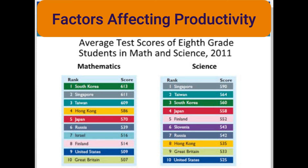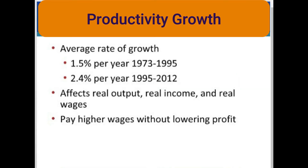The test performance of U.S. 8th grade students did not compare favorably with that of 8th graders in several other nations in the 4th International Math and Science Study from 2011. In mathematics, the United States came in 9th, and in science, 10th. As measured by changes in the Index of Labor Productivity, the growth rate doubled in the period of 1995 to 2012 compared to the period of 1973 to 1995. Economists relate the increase to a significant wave of new technology, coupled with global competition.